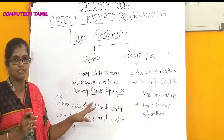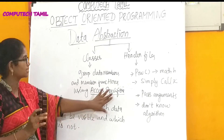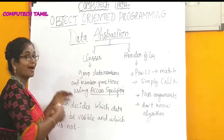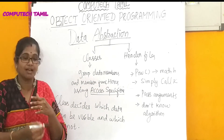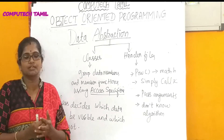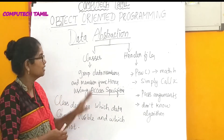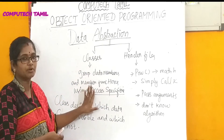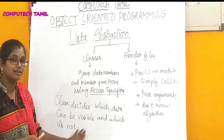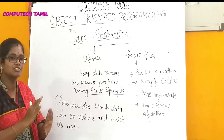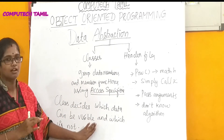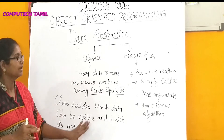We can look at access specifiers in detail in another video. When we use access specifiers, we can decide which members are private, public, or protected inside a class — that is, we can decide which members are visible from outside the class.